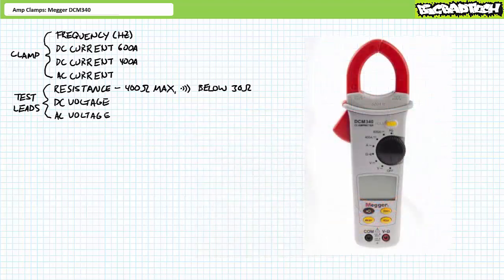The audible continuity test sounds a tone for any resistance reading of less than 30 ohms. This is a handy feature because a technician doesn't need to look at the display to interpret numbers. If it beeps, there's a connection of less than 30 ohms. If it doesn't beep, there isn't.